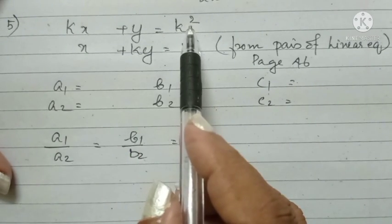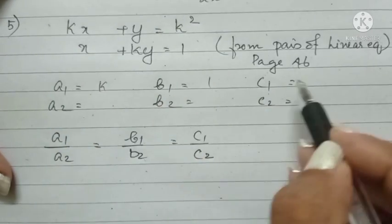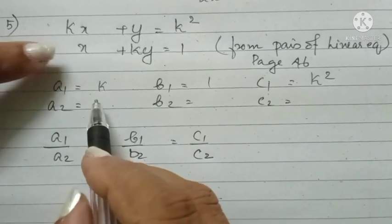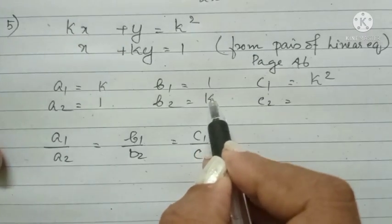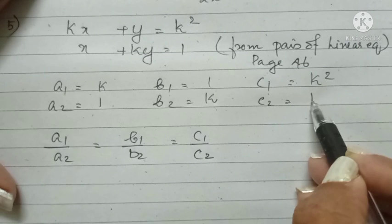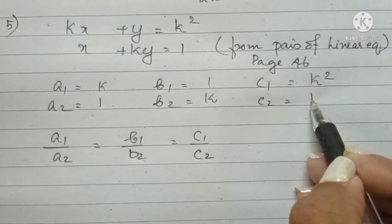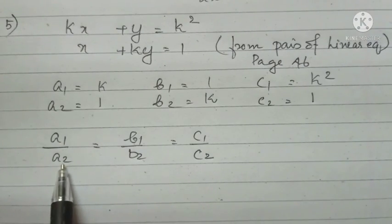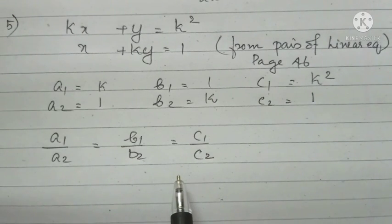From the first equation, A1 is equal to K, B1 is equal to 1, C1 equal to K squared. From the second equation, A2 is equal to coefficient of X, which is 1. B2 is equal to coefficient of Y, it will be K. And C2 will be the constant term, that is 1. In the question, it is given that these equations have infinitely many solutions. Therefore, A1 by A2 equal to B1 by B2 equal to C1 by C2.